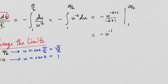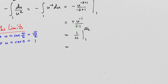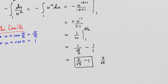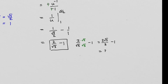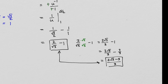Applying the power rule: negative u to the negative 1 over negative 1. The negatives cancel, giving 1 over u evaluated from 1 to radical 3 over 2. This equals 1 over radical 3 over 2 minus 1 over 1, which is 2 over radical 3 minus 1. Rationalizing by multiplying by radical 3 over radical 3 gives 2 radical 3 over 3 minus 1. With a common denominator of 3, this is 2 radical 3 minus 3 over 3. Both forms are equivalent.